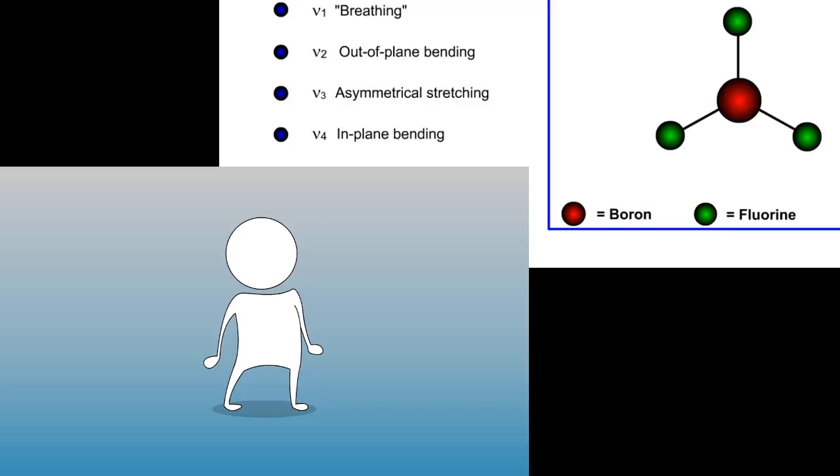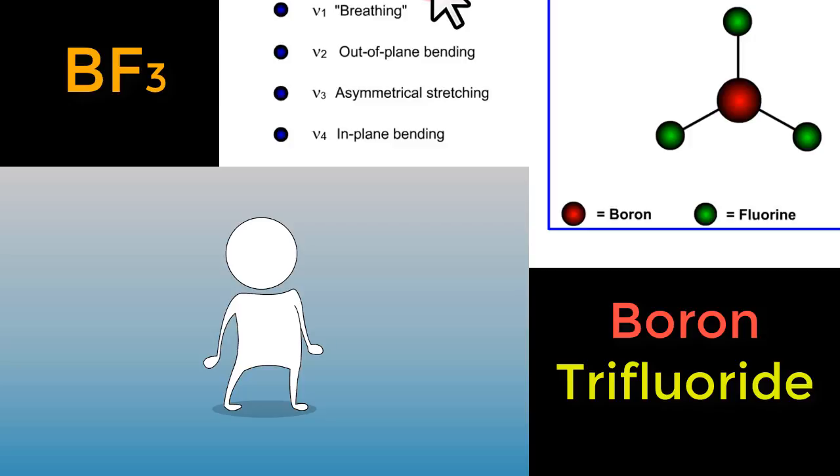So let's consider a more complicated example, BF3, boron trifluoride. BF3 has four normal modes of vibration.